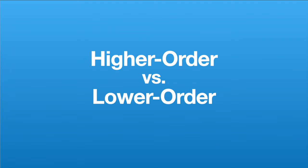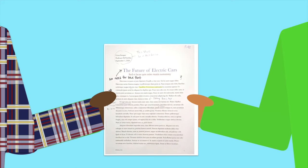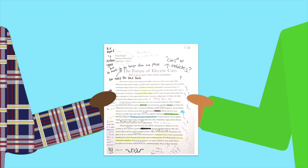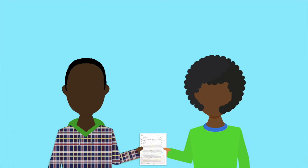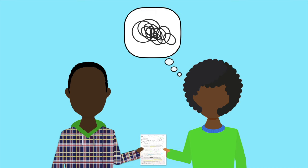Here are two things to keep in mind. First, you'll need to prioritize. You probably won't have enough time to include a written comment on everything you notice, and even if you did, the amount of comments might be overwhelming for the writer. Instead, you should focus on what's most important.